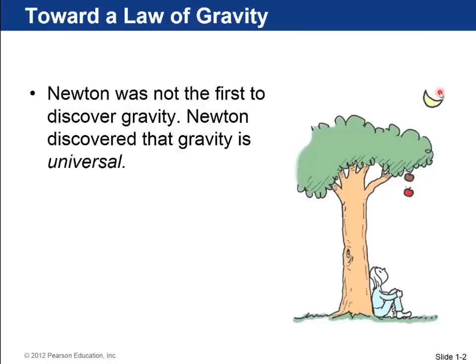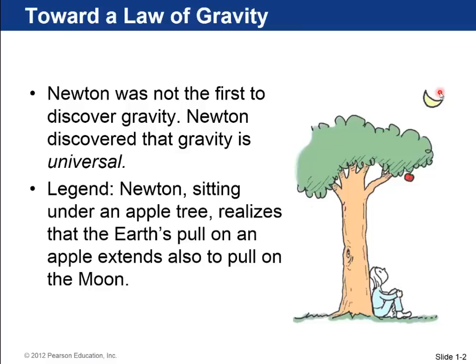Newton discovered that gravity is universal, and the legend is that one day he was sitting out under the apple tree, saw an apple fall, and realized that the same force that was pulling down on that apple could be the force that reaches all the way out into space and pulls the moon in its orbit around the earth.